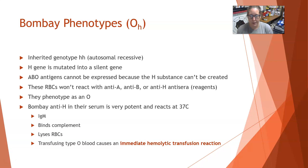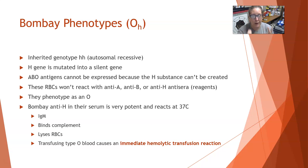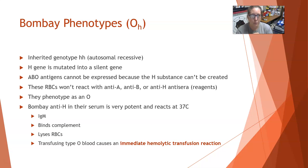If you transfuse type O blood into a Bombay phenotype patient, those O cells are covered in H antigens. Since the Bombay person has anti-H antibodies in their serum, giving them O blood with all that H antigen will cause an immediate hemolytic transfusion reaction that could be life-threatening. A Bombay phenotype person can only receive transfusion from another Bombay phenotype person, which makes finding a compatible donor really, really difficult.